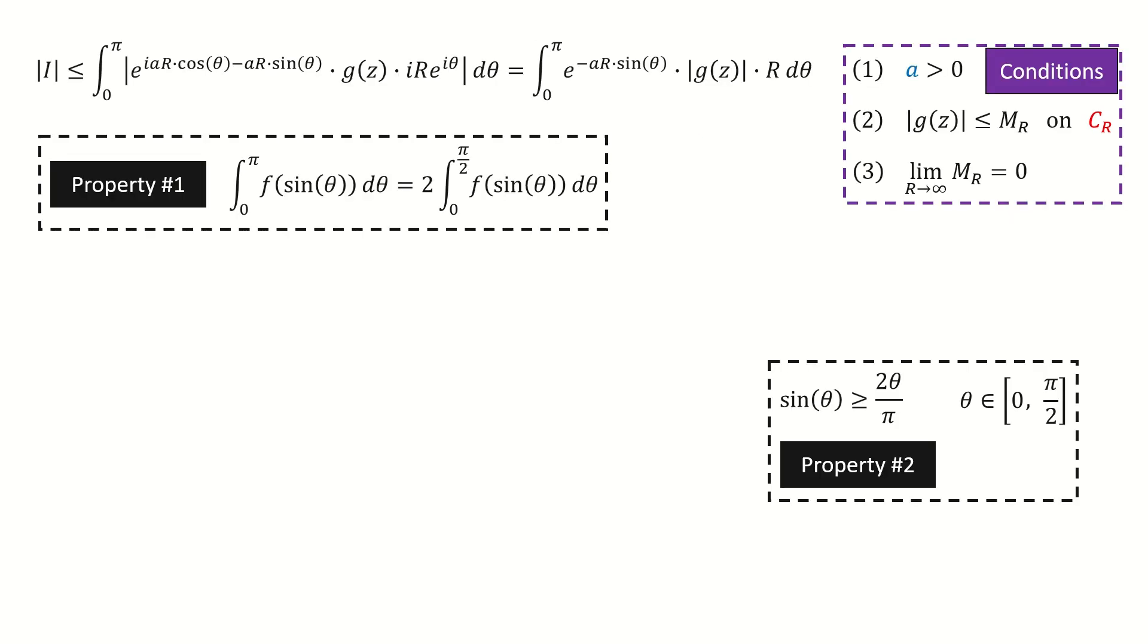I copy them here. So first, we use condition number 2. The modulus of the function g has an upper bound on this semicircle. So we got here. And note for this upper bound, it only depends on r, not on theta. So we can take this term out of the integral. So we got here.